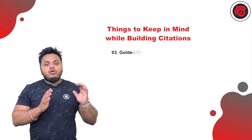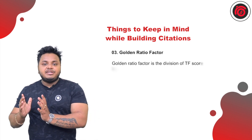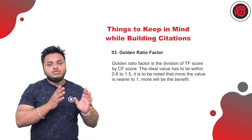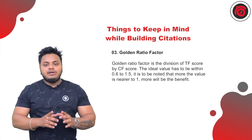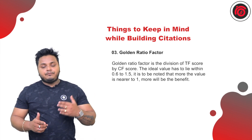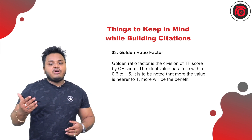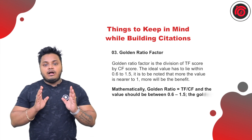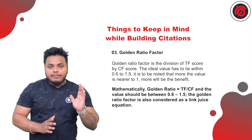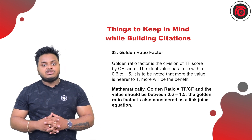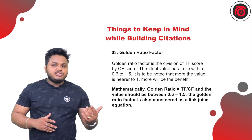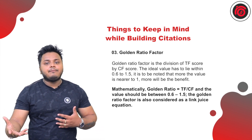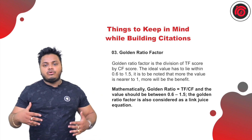Factor number three: Golden Ratio Factor. In short, the Golden Ratio Factor is simply the division of TF divided by CF, and that value needs to be between 0.6 to 1.5. The closer it is to 1, the better it is. For instance, if you have a score of 0.8 versus a score of 0.9, then 0.9 would be the better value because it is closer to 1. The ideal range is 0.6 to 1.5, and the Golden Ratio Factor is a qualitative measure of how you are balancing your entire campaign with respect to trust flow and citation flow.